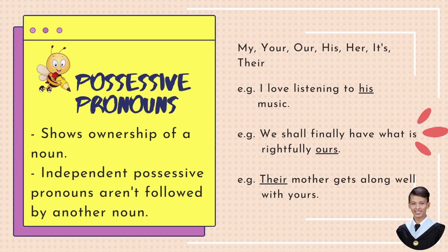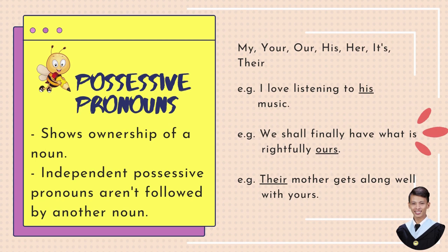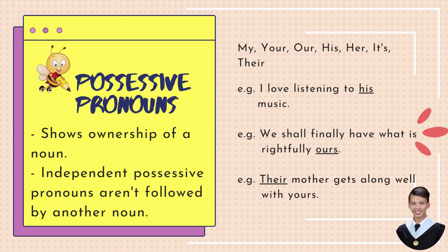Possessive pronouns show ownership of a noun. Independent possessive pronouns aren't followed by another noun. Possessive pronouns are: my, your, our, his, her, its, and their. Example: I love listening to his music. In this sentence, the possessive pronoun is the word 'his.' Remember that possessive pronouns show ownership of a noun — it is his music, he owns the music.